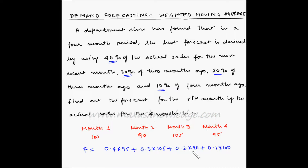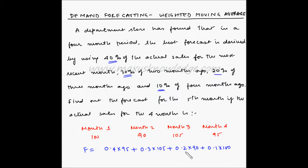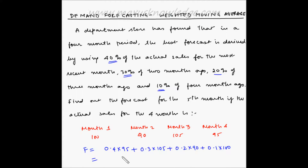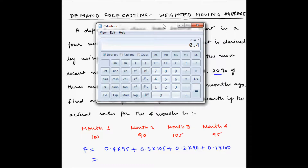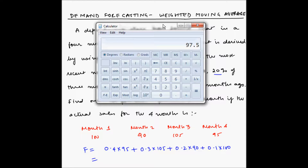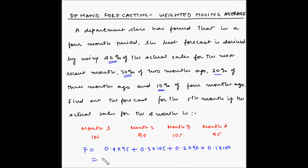One validation is that the total of the weights should equal 1: 0.4 plus 0.3 is 0.7, plus 0.2 is 0.9, and plus 0.1 is 1. So the calculation gives: 0.4 × 95 + 0.3 × 105 + 0.2 × 90 + 0.1 × 100 = 97.5. The forecasted demand for the fifth month is 97.5 units.